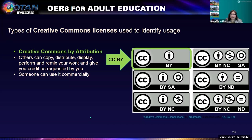The first license is CC BY — Creative Commons by attribution. Others can copy, distribute, display, perform, and remix your work and give you credit as requested. Someone can use your resource commercially. So if you have a picture licensed as CC BY, someone can include it in their book — giving you credit — and then sell their book. Authors often go to sites like Pixabay or Unsplash to find images for their resources.